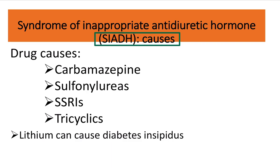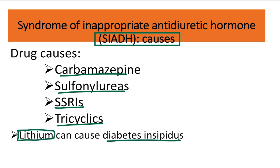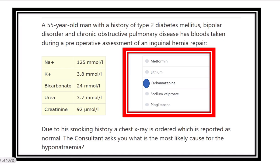The drugs that cause SIADH are carbamazepine, sulfonylurea, SSRIs, and tricyclics. So the cause of the hyponatremia in this patient is carbamazepine, used for bipolar disorder, which causes SIADH and leads to the low sodium level.